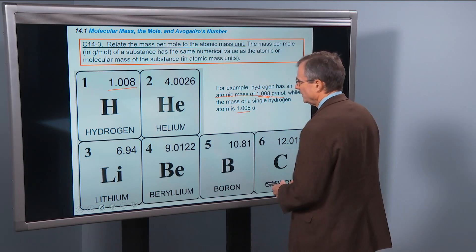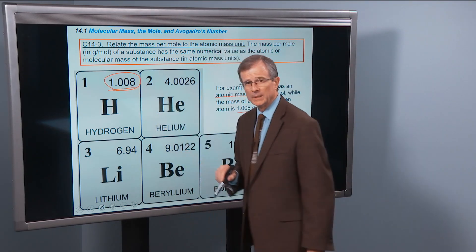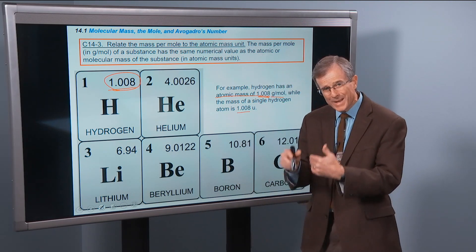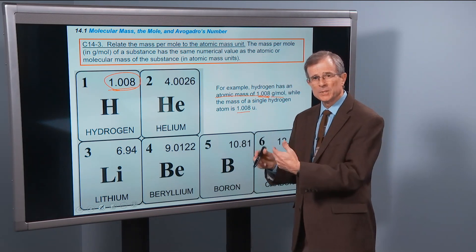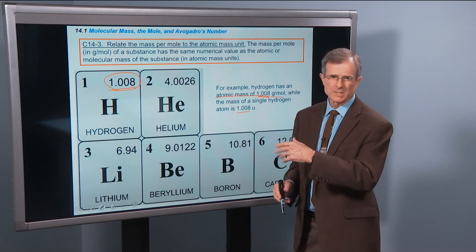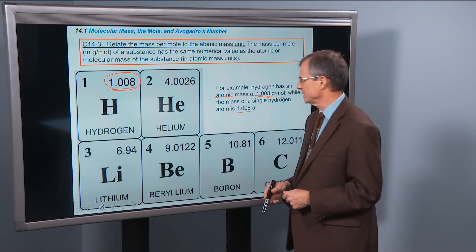So the number means two things: the number of grams per mole, and it also means the mass of one atom measured in units of the atomic mass unit, 1.66 times 10 to the minus 27 kilograms.